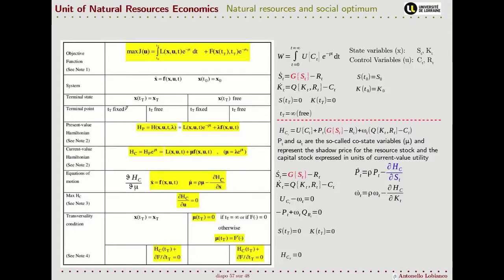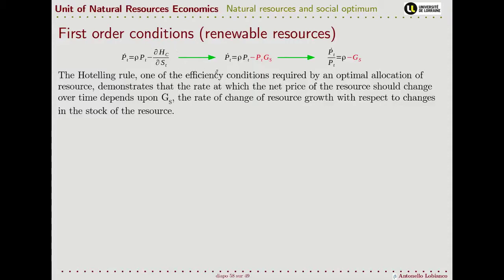How does our optimization model change, and how does our solution to the problem change? Well, as with the case of extraction cost, now the stock of the resource enters inside our Hamiltonian, and hence this derivative is no longer zero. When we expand the derivative, we obtain this term here, and when we arrange, we can see that our Hotelling rule is modified: the growth rate of the price of the natural resource is no longer just equal to the social discount rate, but depends also on the rate of change of the resource growth with respect to the stock of the resource.